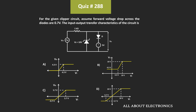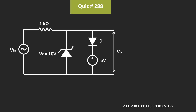To find the transfer characteristic, first let's see how this circuit will behave during the positive half cycle. During the positive half cycle, this diode D will conduct when the voltage at the anode of this diode is 0.7V greater than the voltage at the cathode.